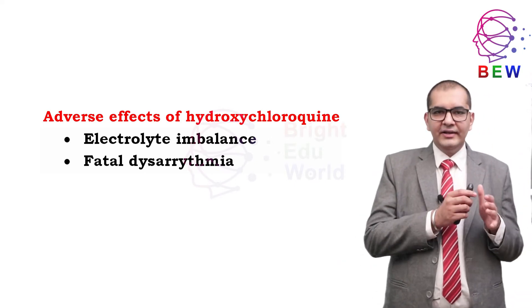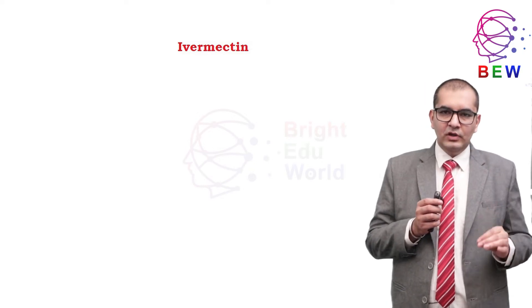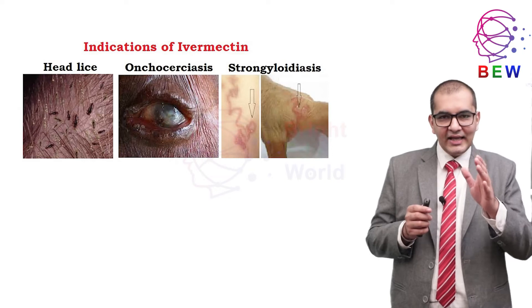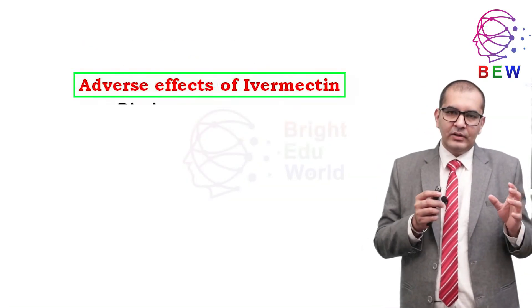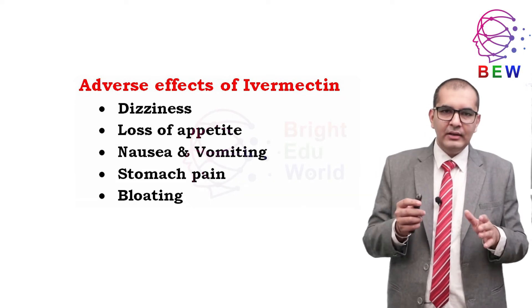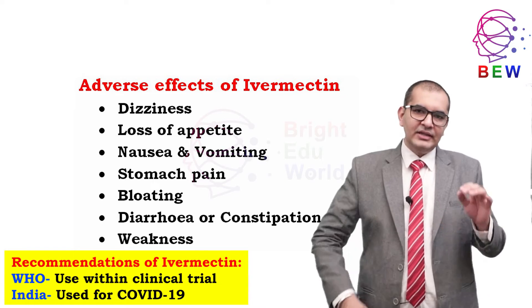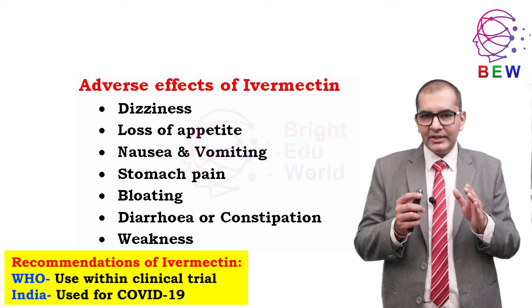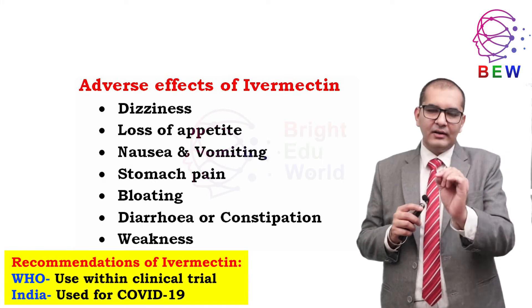The next category is ivermectin, an anti-parasitic medication used to treat head lice, onchocerciasis, strongyloidiasis, ascariasis, trichuriasis, and enterobiasis. Adverse effects include dizziness, loss of appetite, nausea, vomiting, stomach pain or bloating, diarrhea, constipation, and weakness. Recommendations are controversial — the WHO advises that ivermectin be used for COVID-19 only within clinical trials, but in India the drug is currently in use.